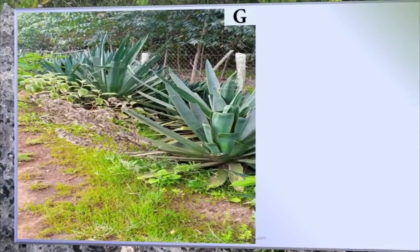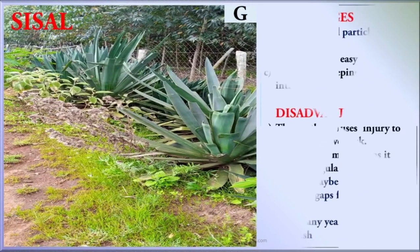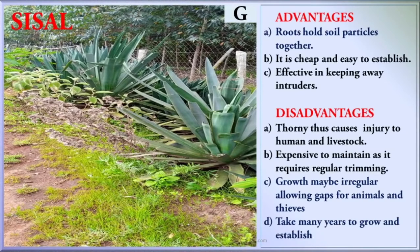Fence G is SISO. SISO has a number of advantages: the roots hold soil particles together; it is cheap and easy to establish; and it is effective in keeping away intruders. However, it has disadvantages: it is thorny and causes injury to humans and livestock; it is expensive to maintain as it requires regular trimming; growth may be irregular, allowing gaps for animals and thieves; and it takes many years to grow and establish.